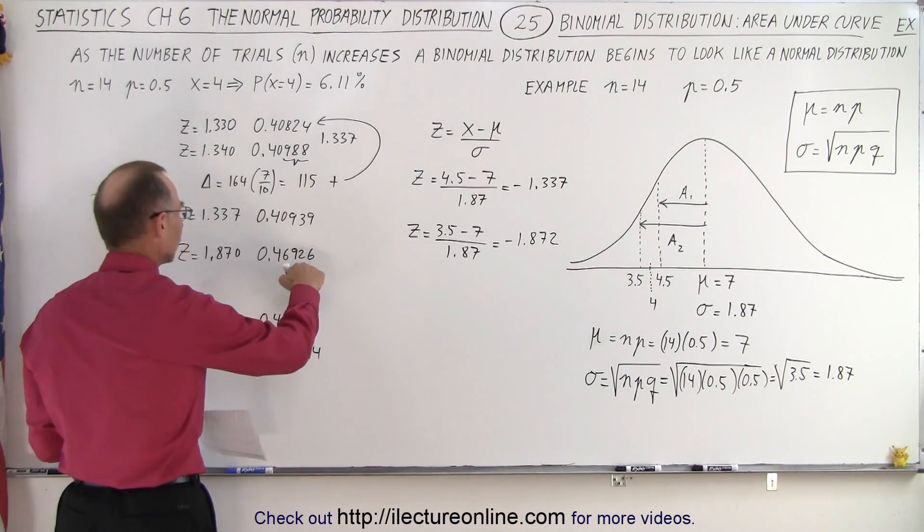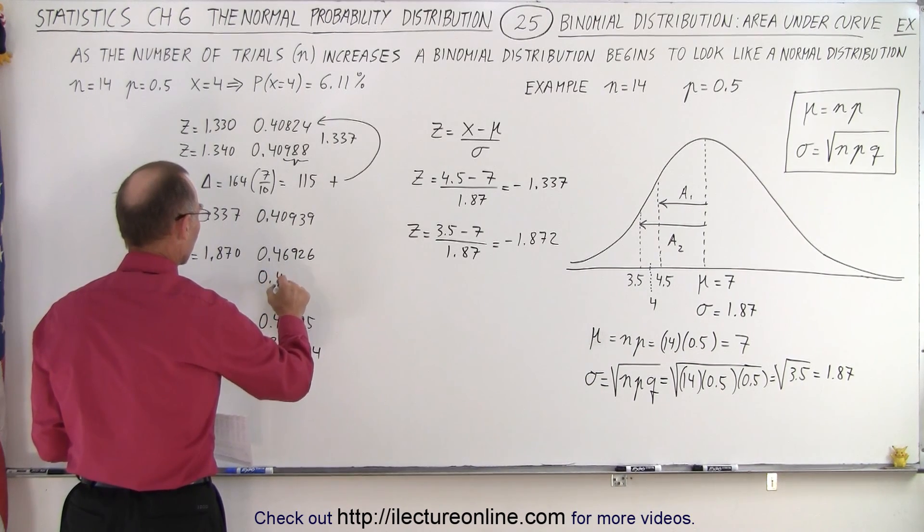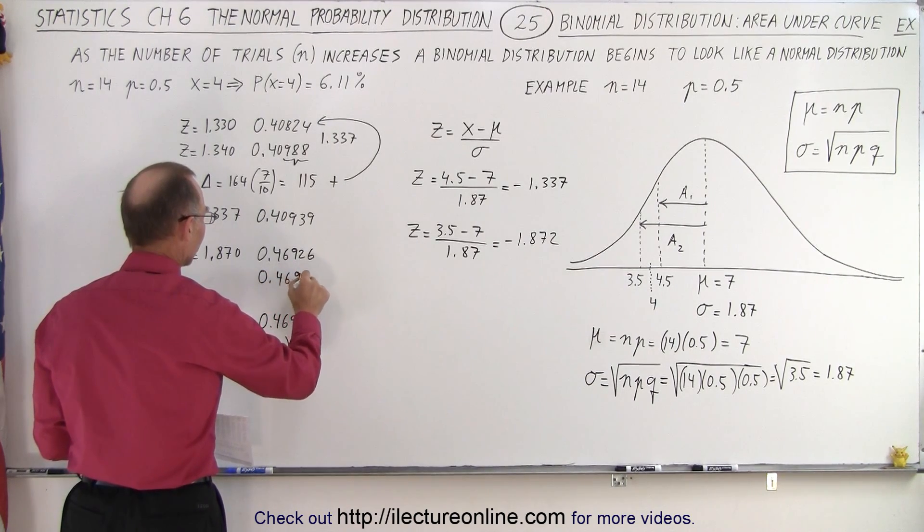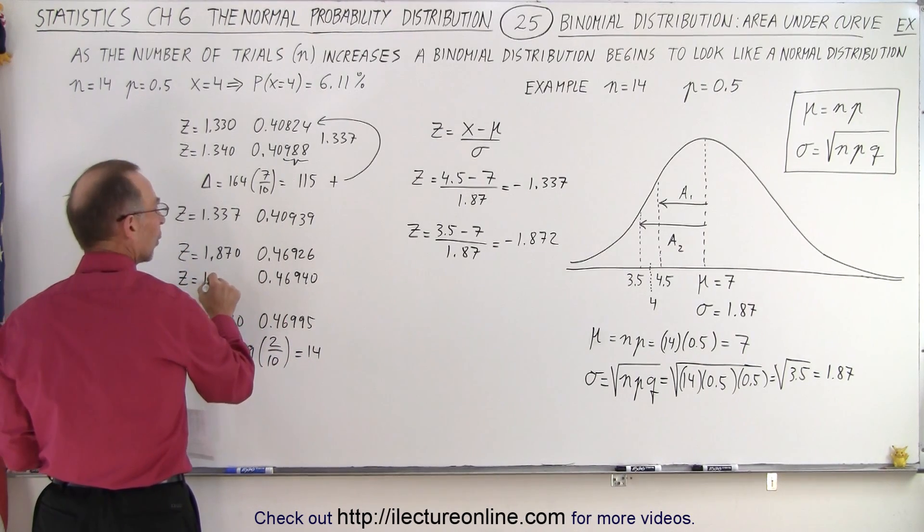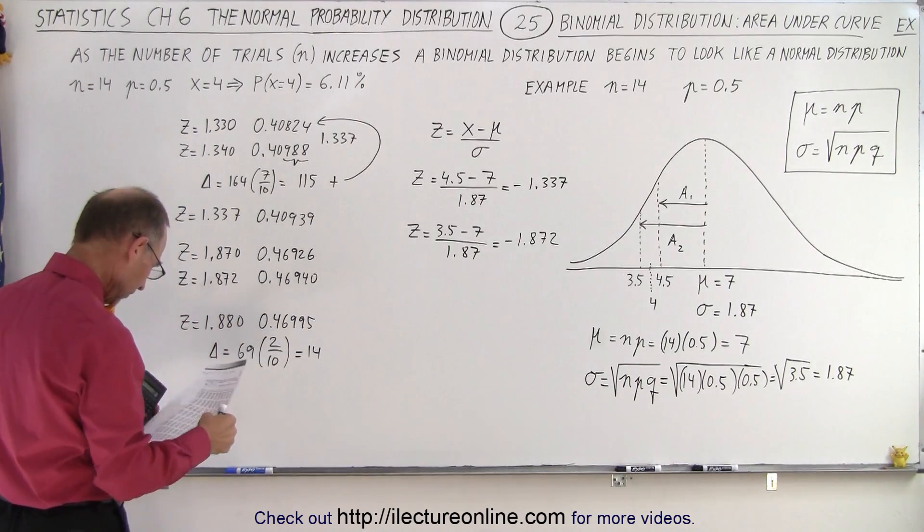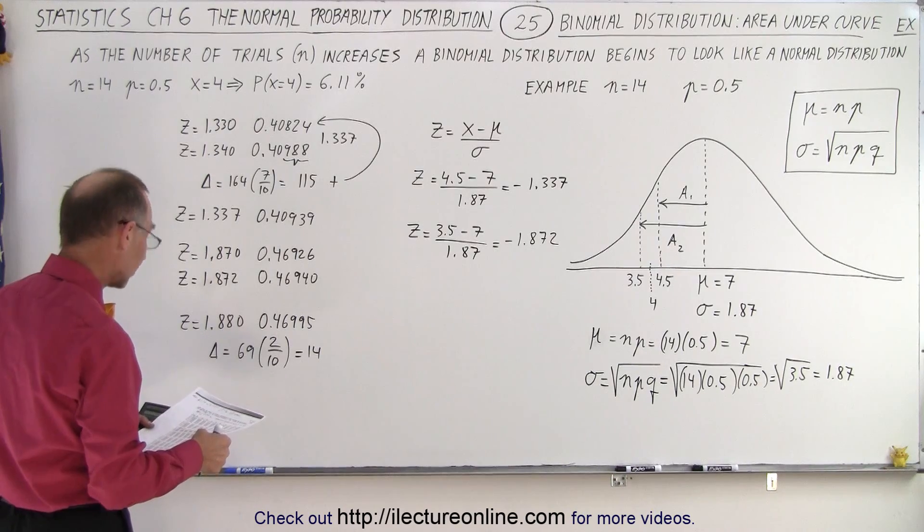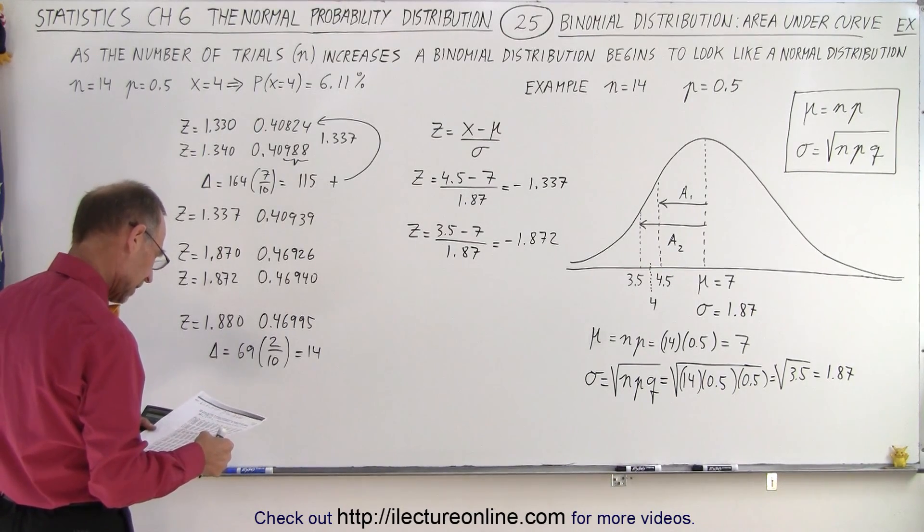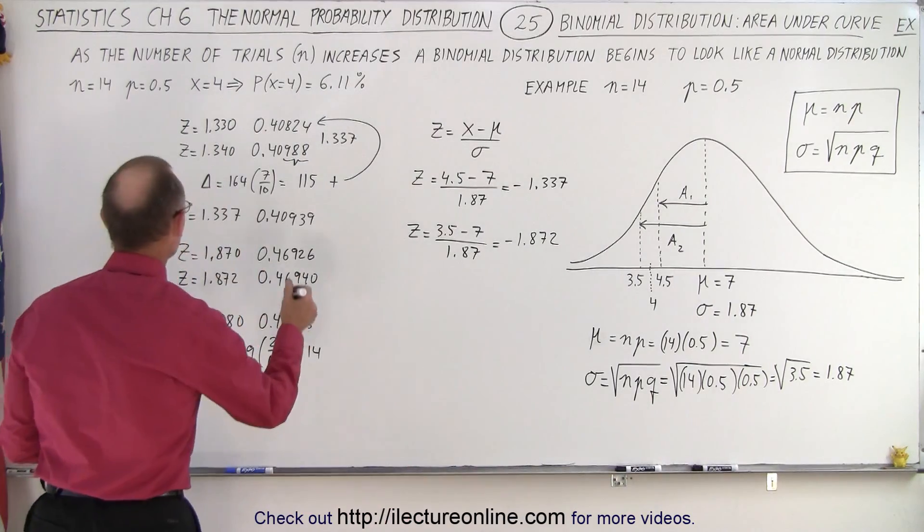I'm going to add that to this value right here so it gives me 0.46940, and that's the z value for 1.872.